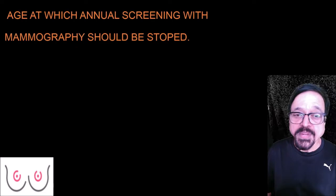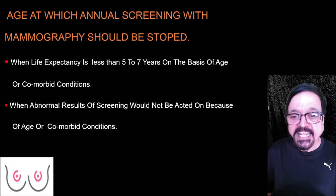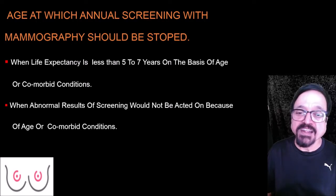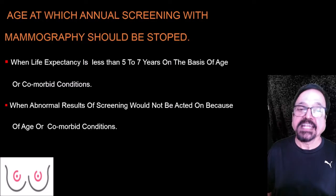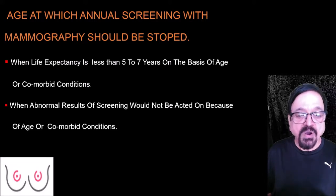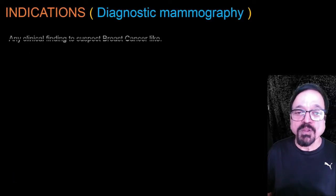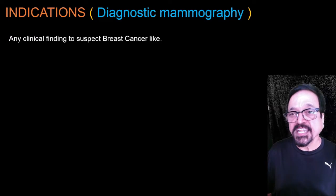Screening mammography starts much earlier when patients have no complaints. Annual screening should be stopped when life expectancy is less than five to seven years based on age or comorbidities — the average life expectancy is now considered around 100 years. Screening should also be stopped when an abnormal result would not affect management due to age or comorbid conditions, such as when a patient has cancer elsewhere or another serious disease.